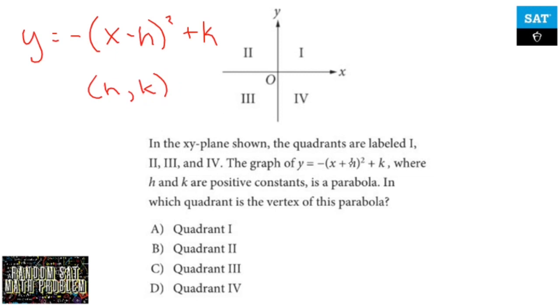Here it's giving me x plus h. So h and k are positive constants. So what's happening here is if it's plus h, that means I have a negative h value and a positive k, since k is still positive, as a vertex.